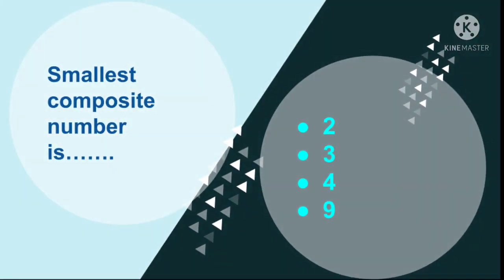Question number 9: Smallest composite number is 2, 3, 4, or 9.